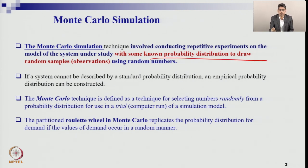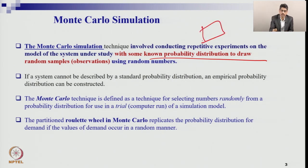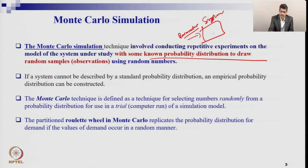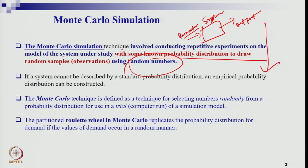Monte Carlo simulation is nothing but generation of different random numbers through the probability distribution of a particular variable. You have a system with an uncertain or risky parameter, and you generate output for different input data. That input data is not given directly — you generate it through random samples. You repeat this process again and again, generating different instances, either through a roll-to-hole process or through the RAND function.